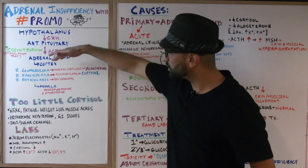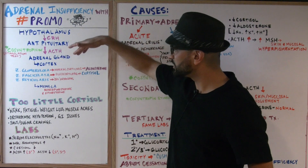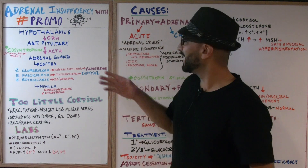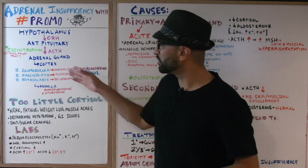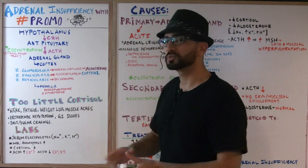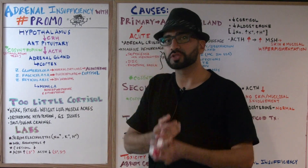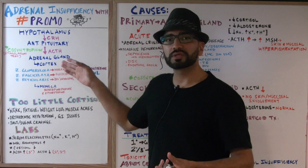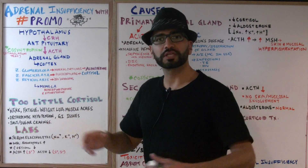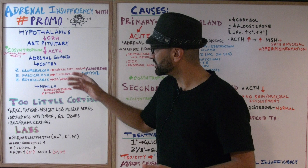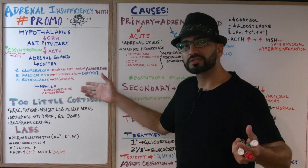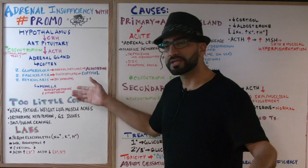The zona glomerulosa is responsible for producing mineralocorticoids, referred to as aldosterone. The zona fasciculata is responsible for glucocorticoids — which is cortisol. We'll get into more details about the zona reticularis in the next few lectures when we talk about the sex androgens. And the medulla, of course, produces norepinephrine and epinephrine.